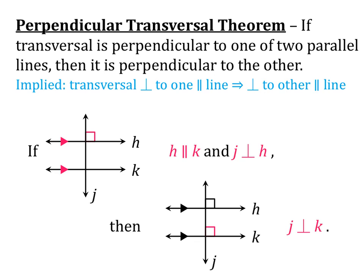Our next theorem is the Perpendicular Transversal Theorem: if a transversal is perpendicular to one of two parallel lines, then it is perpendicular to the other. Write this down — transversal perpendicular to one parallel line implies perpendicular to the other parallel line. In our illustrative if-then statement: we know the lines are parallel because of the parallel symbols. If H is parallel to K and J is perpendicular to H, then J is also perpendicular to K.